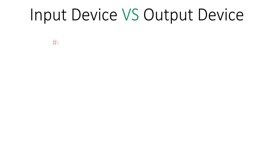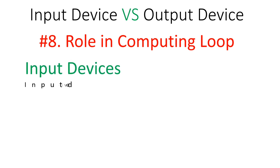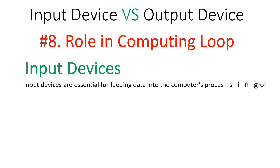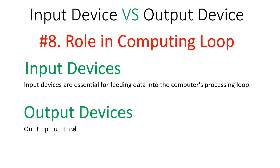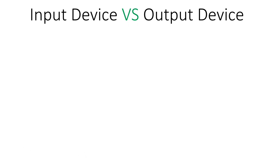In terms of role in the computing loop, input devices are essential for feeding data into the computer's processing loop. Output devices complete the computing loop by presenting the results of processing to the user.